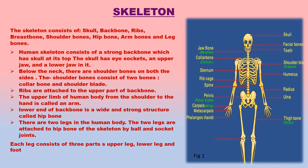The human skeleton consists of a strong backbone which has skull at its top end. The skull has eye sockets, an upper jaw and a lower jaw. Ribs are attached to the upper part of backbone forming a rib cage. At the lower end of backbone is a wide and strong structure called hip bone. Just below the neck, there are shoulder bones on both sides, consisting of collar bone and shoulder blade. The upper arm is from shoulder to elbow.